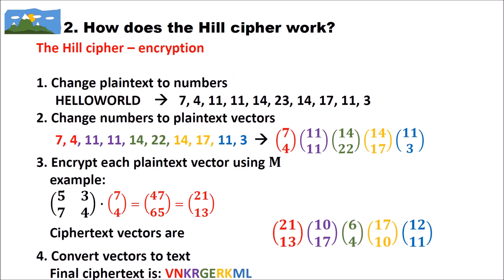Now let's look at how encryption works. We want to encrypt the plain text 'Hello World'. First, convert the plain text to numbers: Hello World becomes 7, 4, 11, 11, 14, 23, and so on. Then in the second step, we change the numbers to plaintext vectors: the first two numbers become vector (7, 4), the second two become vector (11, 11), and so on — giving us five vectors for 'Hello World'.